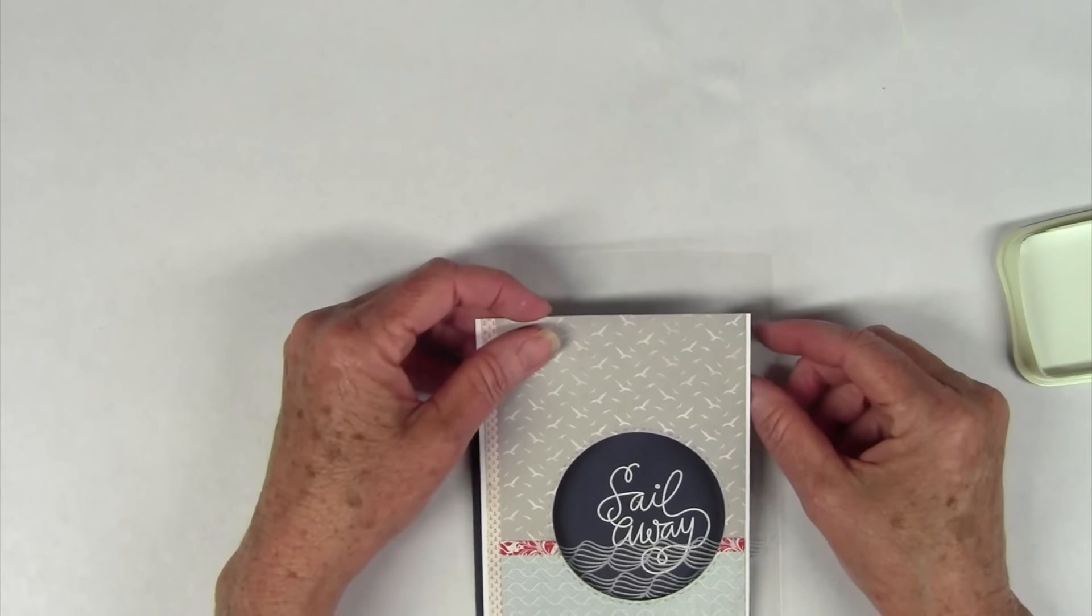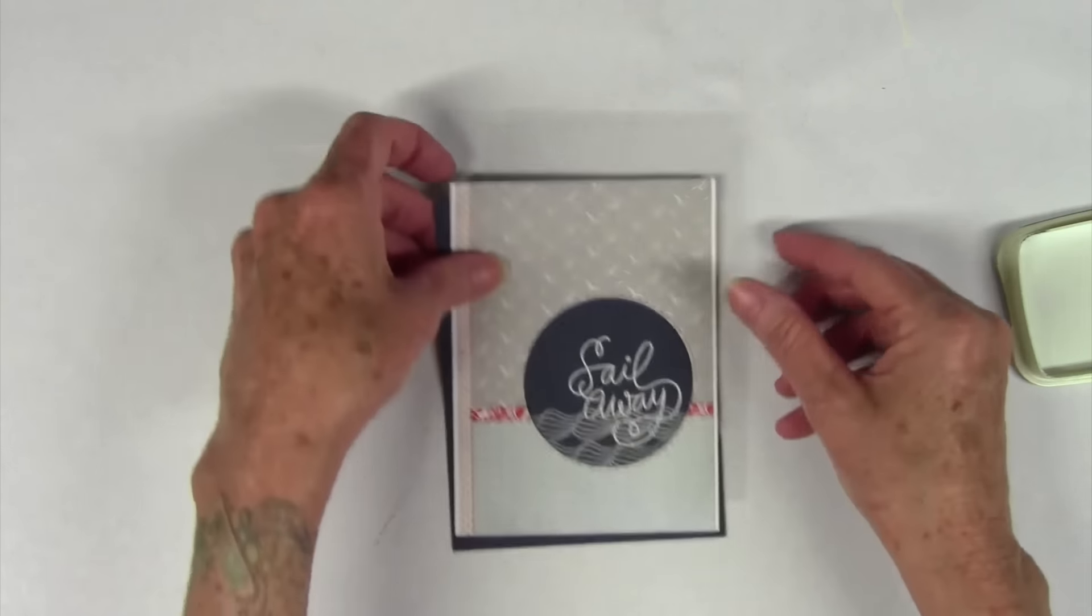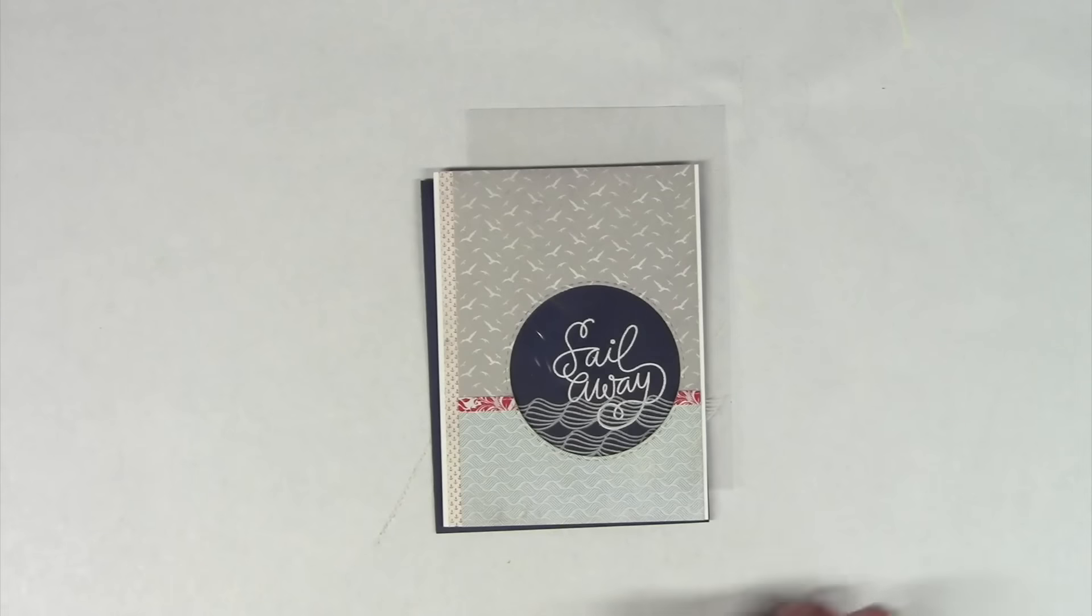Here's how everything will start looking once I put them together and I'm also kind of getting an eye of where I need to trim that acetate down so I can adhere it to the back of that panel.